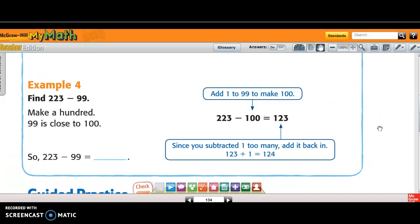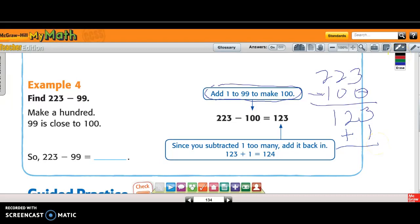So it says find 223 minus 99. So the rule is, when the number ends in 9 or 99, I make that into a 10. I add 1 to that. So I'm going to add 1 to 99, and I get 100. So now I have 223 minus 100. 3 minus 0 is 3, 2 minus 0 is 2, and 2 minus 1 is 1. Because I subtracted 1 too many, I have to do the opposite to my answer. If I subtracted 1, what am I going to do to my answer? Add 1. And it says since you subtracted 1 too many, add it back in. So 123 plus 1 is going to be 124.